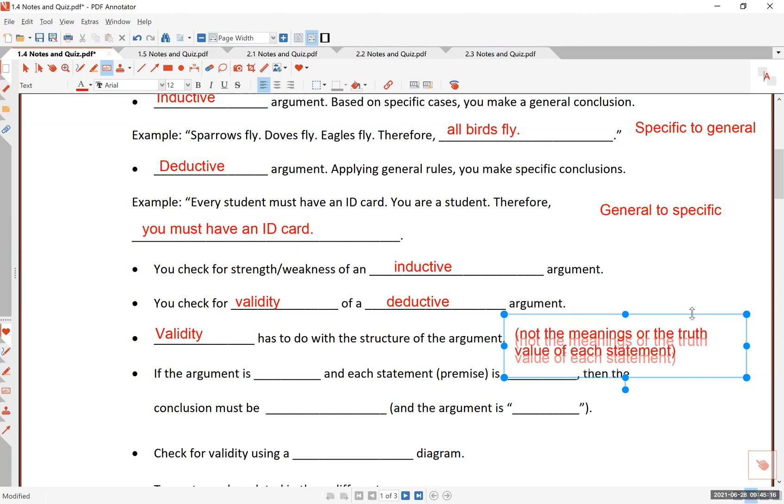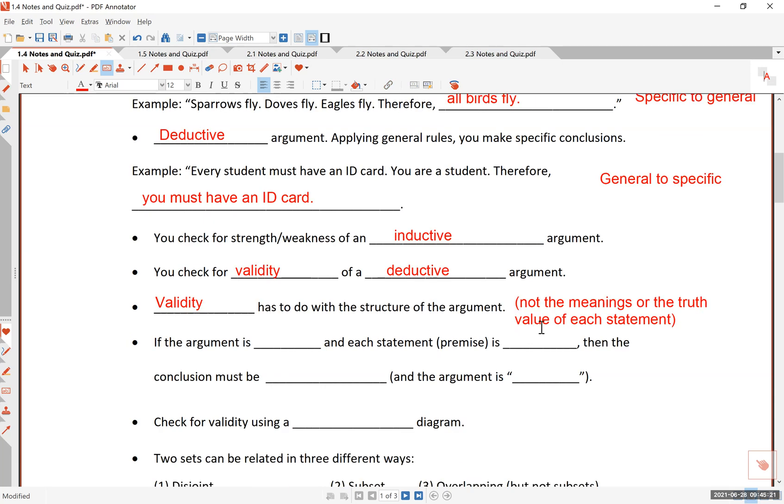So you can make a false claim at the beginning and you can still have a valid argument. And I will talk about this when we go deep into this. But for instance, if the argument is valid, and that means if the logical structure is correct, that's what the word valid means. If the argument is valid, and if each statement, which we call premise, is true, in other words, if what we say in the argument is correct, and if the argument itself has a valid structure, then the conclusion must be true.